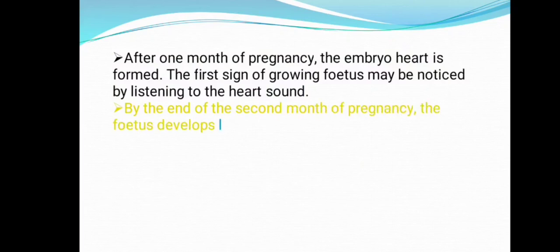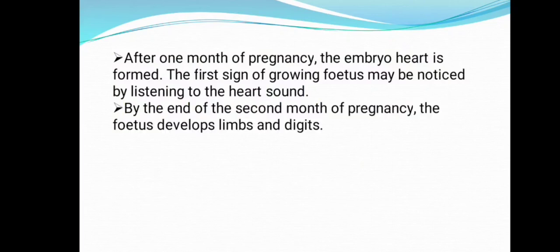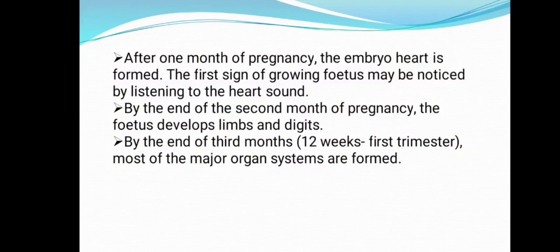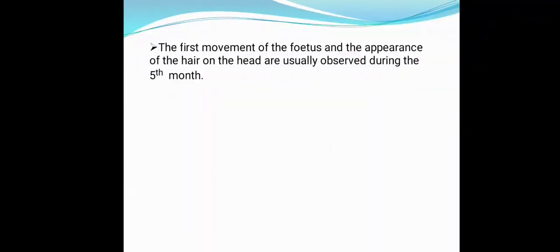By the end of the second month, the fetus develops limbs and digits. By the end of the third month — called the first trimester, or 12 weeks — most of the major organ systems are formed. The first movement of the fetus and the appearance of hair on the head are usually observed during the fifth month of pregnancy.